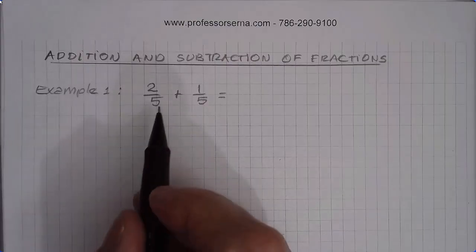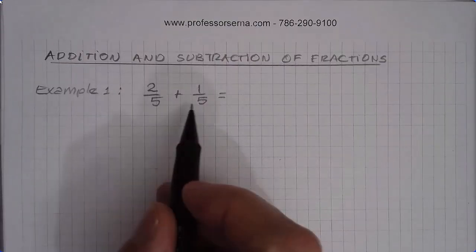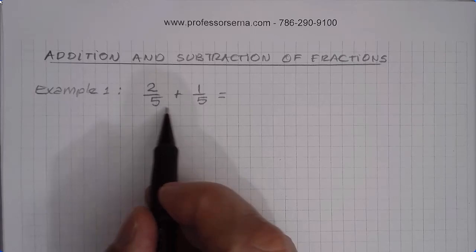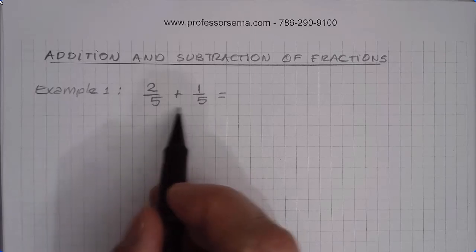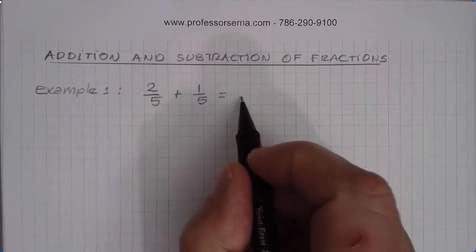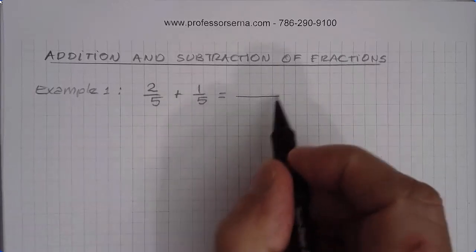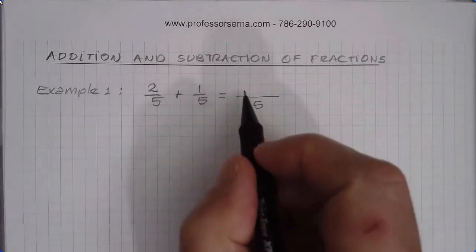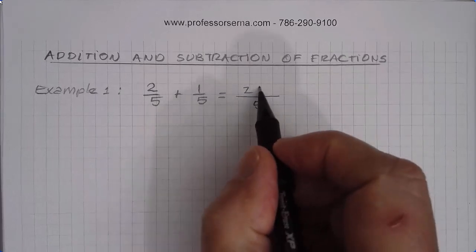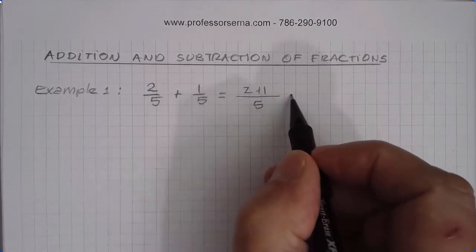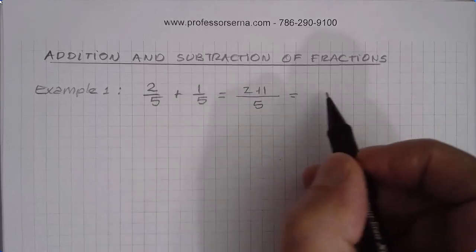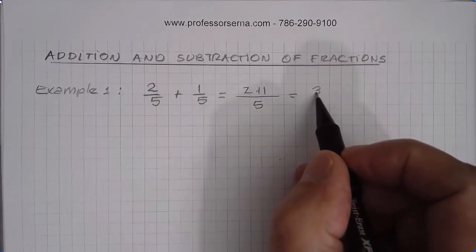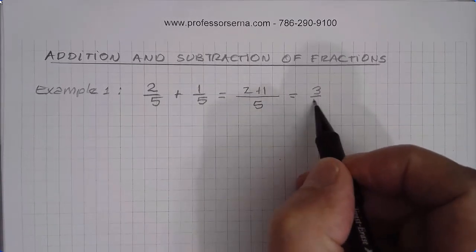When adding and subtracting fractions with the same denominator, just keep the denominator and add the numerators. So in this case, we end up with 3 over 5 — three fifths.